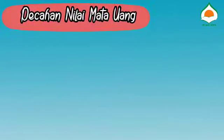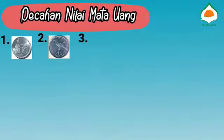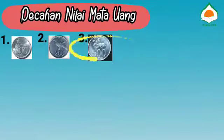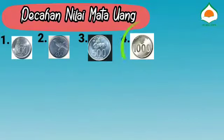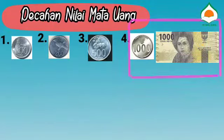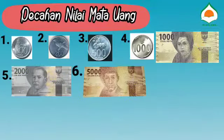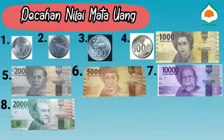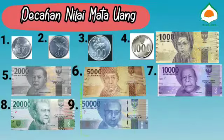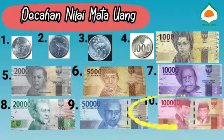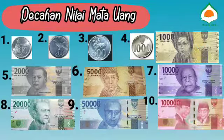Sekarang kita coba urutkan pecahan uang mulai dari yang nilainya paling kecil. Yang pertama 100 rupiah, yang kedua 200 rupiah, yang ketiga 500 rupiah, yang keempat 1.000 rupiah — uang logam dan kertas memiliki nilai yang sama. Yang kelima 2.000 rupiah, yang keenam 5.000 rupiah, yang ketujuh 10.000 rupiah, yang kedelapan 20.000 rupiah.